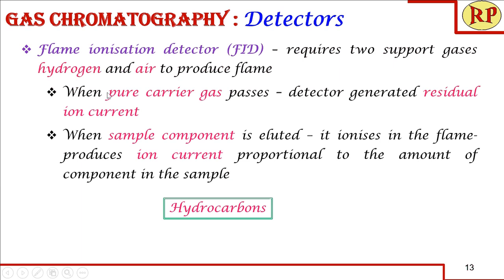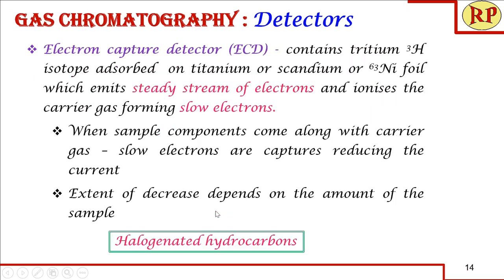The flame ionization detector, FID, requires two support gases in addition to the mobile phase — hydrogen as fuel and air — to produce a flame. When only the pure carrier gas enters both compartments, there is only residual ion current. When a sample component is eluted, an ion current is produced proportional to the amount of the component — more quantity means more ion current. FID is mainly suitable for hydrocarbons.